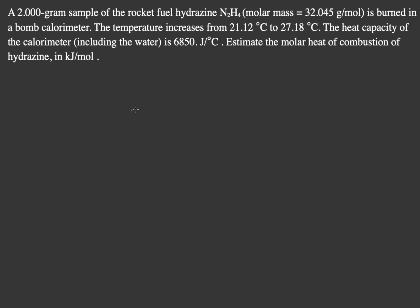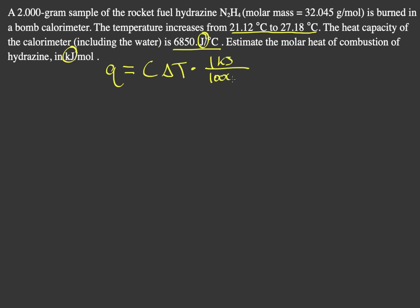You have a two gram sample of rocket fuel and you burn it. You notice that there's a temperature change, and you also know that you have a specific heat capacity for the calorimeter. So you can relate this with Q, which is our heat of combustion, equals our heat capacity times the temperature change. Then you want to change from joules to kilojoules, so we multiply by one kilojoule over 1,000 joules.